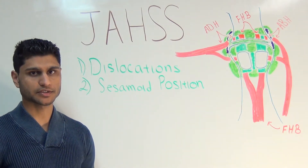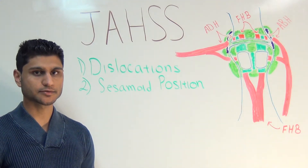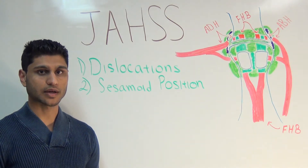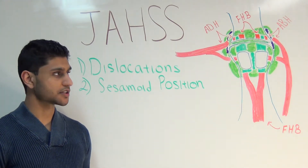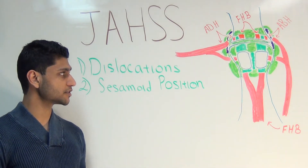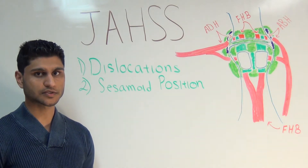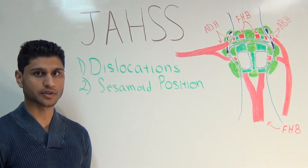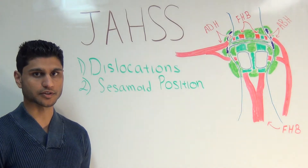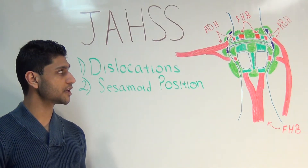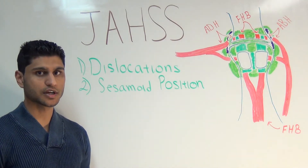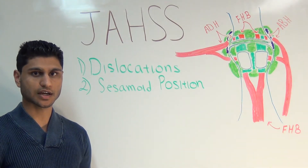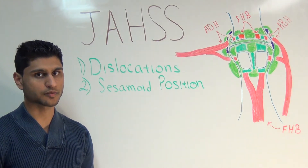The JAWS classification describes dislocations of the first metatarsal phalangeal, or MTP joint. This entire classification system is based off the sesamoid position, their movement or lack of movement, and their relationship to each other. Before we begin describing the different stages, we should take a step back and review some basic anatomical and biomechanical principles.